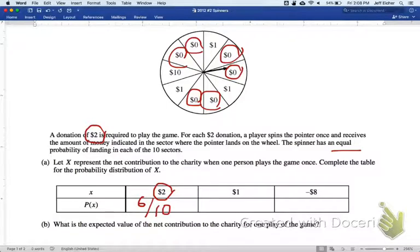If the contribution to the charity is $1, that means you paid $2, you must have won a buck, and then the charity keeps a buck. So that would mean you must have hit one of these guys. There's 3 out of 10.